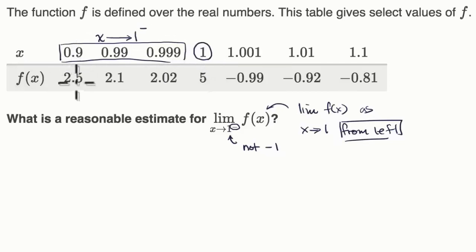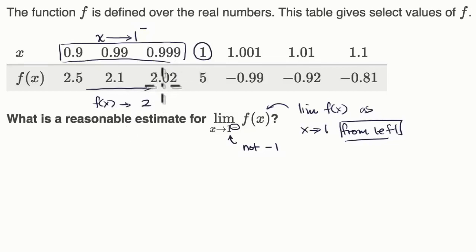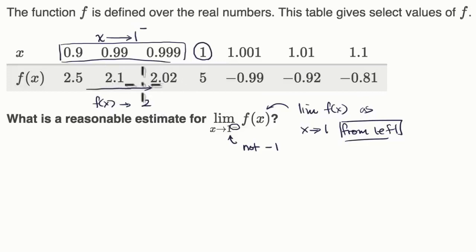At 0.9, f of x is 2.5. When we get even closer to one from the left, we go to 2.1. When we get even closer, we're getting even closer to two. So a reasonable estimate for the limit as x approaches one from the left of f of x looks like f of x is approaching two. We don't know for sure — it might be approaching 2.01 or 1.999. On Khan Academy these are often multiple choice, so you pick the most reasonable one. Two is a reasonable estimate here, although it could be 2.01258 or something else.